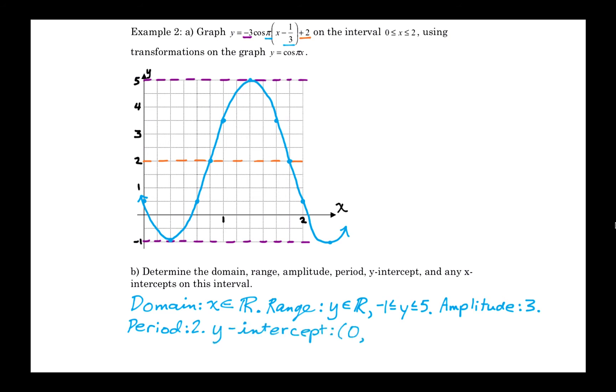The y-intercept is what you get for y when x equals 0. Now it happens to be right bang on a grid point, so it's a half. But of course you can get this by doing 0, take away a third, multiplying that by pi, a third pi. So pi over 3, take the cosine of that, multiply by negative 3 and add 2, and you would find you get 0.5 or 1 half for the y value.